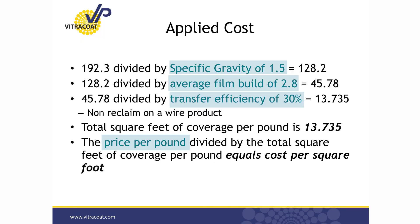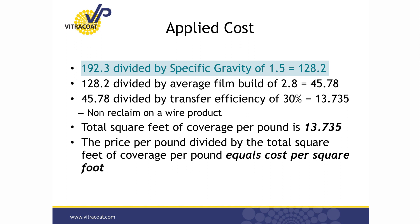So now let's walk through the calculation. I've got specific gravity, cost per pound, average film build, and transfer efficiency. For applied costs: if I have a product with a specific gravity of 1.0 — water as an example — and I pour that on the ground and evenly distribute it at one mil, utilizing 100% of it, I will cover 192.3 square feet. The gravity of the powder I'm using is higher than that, so for calculation purposes let's use 1.5 gravity. I take 192.3, the constant, divided by 1.5, and I'm at 128.2 square feet.